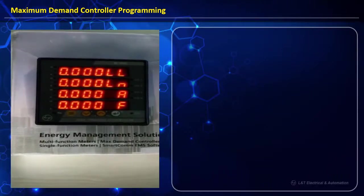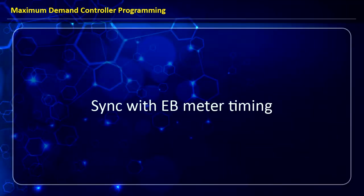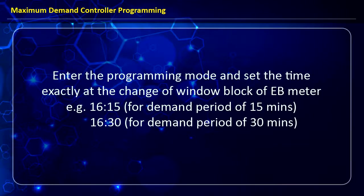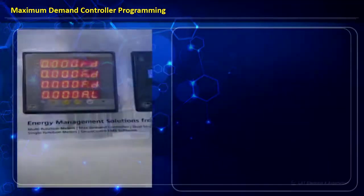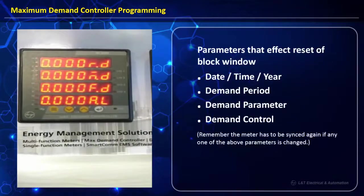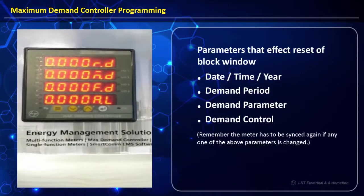There is one more important step: syncing with the EB meter. We enter programming mode and set the time exactly at the change of the window block of the EB meter. Remember that if we update any values of date, time, year, demand period (15 or 30 minutes), or demand parameters such as wattage, VA, VAR, or even the demand type (sliding or block window), this will cause the start of the block window to get reset.